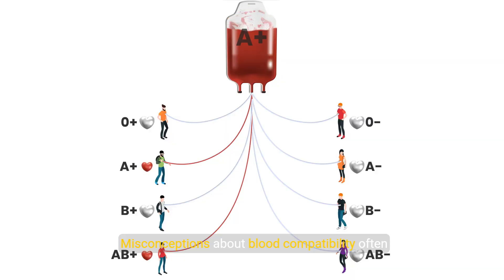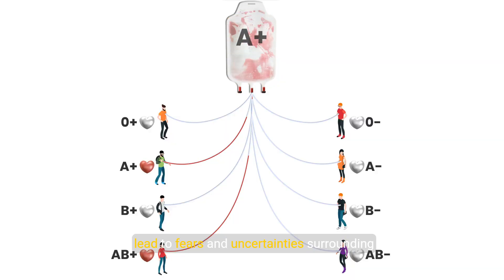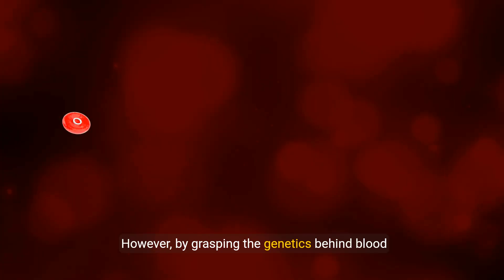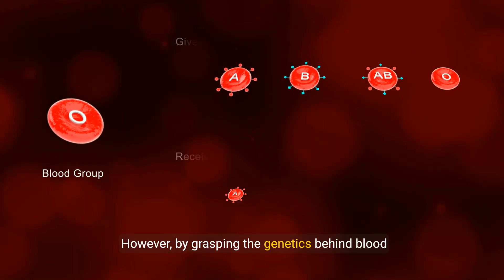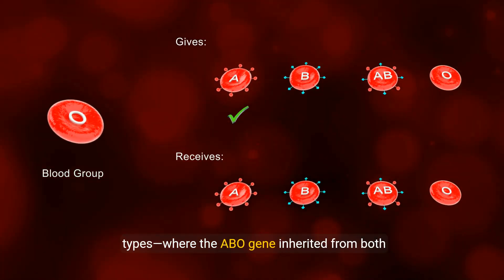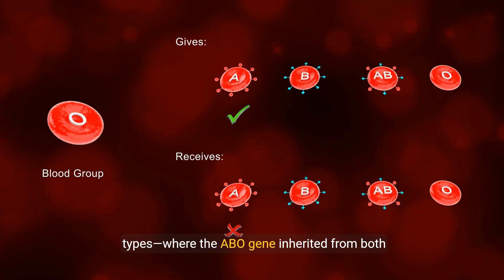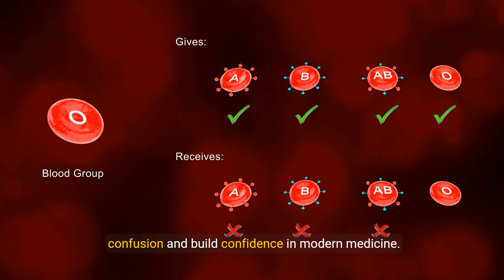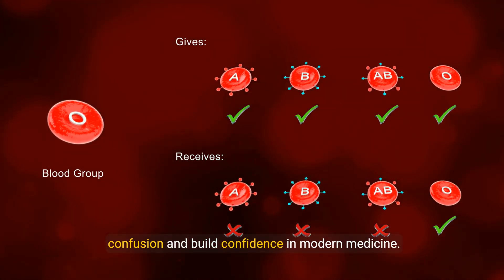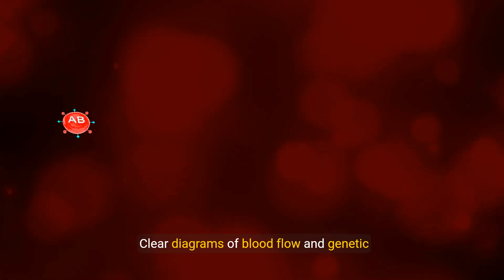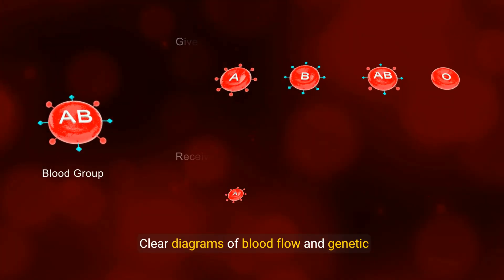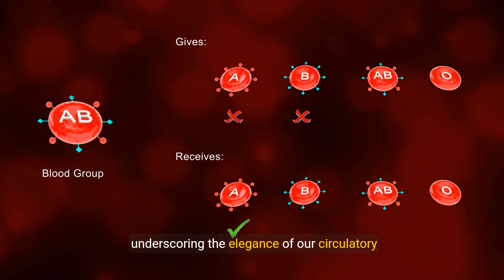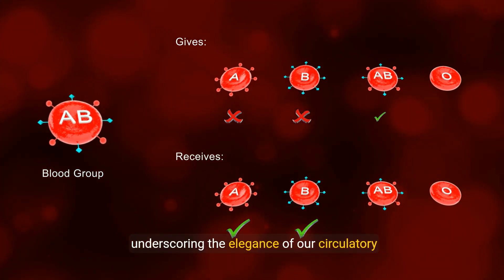Misconceptions about blood compatibility often lead to fears and uncertainties surrounding transfusions. However, by grasping the genetics behind blood types — where the ABO gene inherited from both parents plays a determining role — we remove confusion and build confidence in modern medicine. Clear diagrams of blood flow and genetic interactions help visualize these processes, underscoring the elegance of our circulatory system.